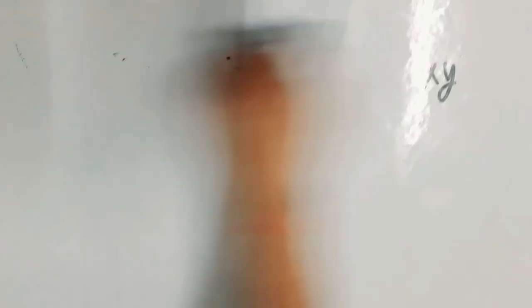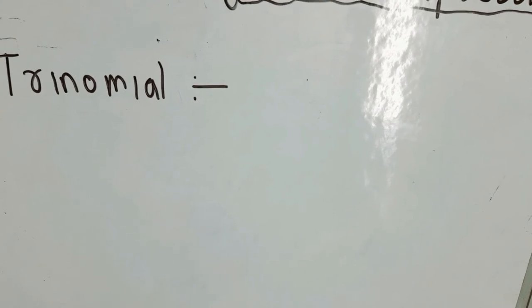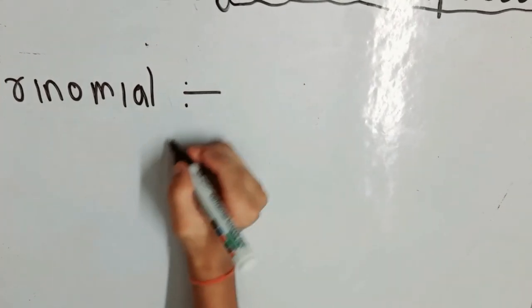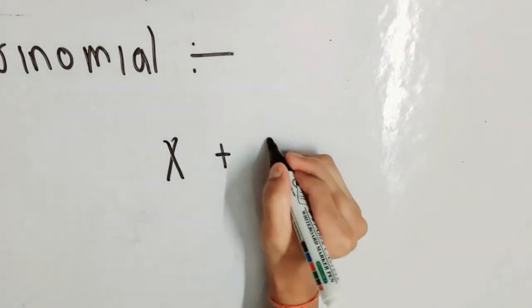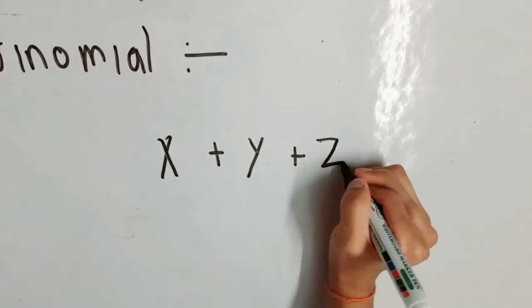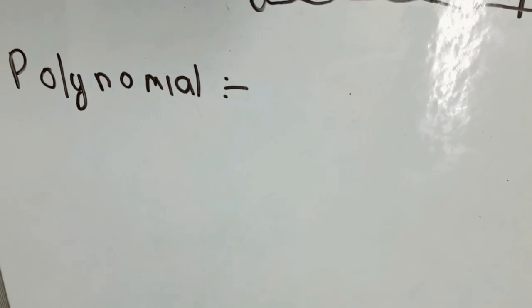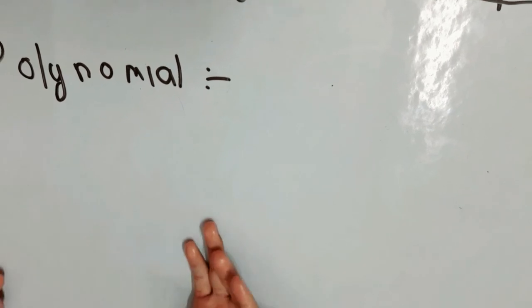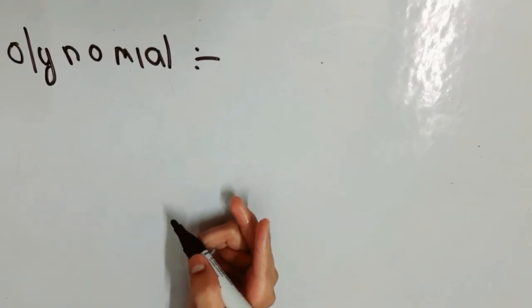An expression which contains three unlike terms is said to be a trinomial. If the terms are like, they can be added and it becomes a monomial, but if they are unlike, you cannot add them. For example, x + y + z is a trinomial. In general, an expression with one or more terms is called a polynomial. Thus a monomial, a binomial, and a trinomial are all polynomials, since a monomial has one term, a binomial has two terms, and a trinomial has three terms.